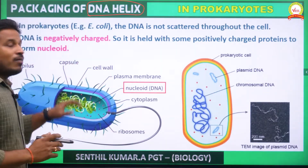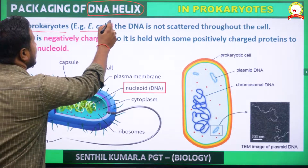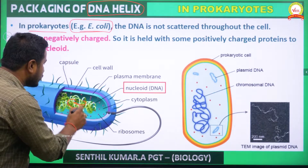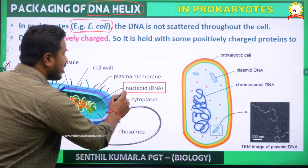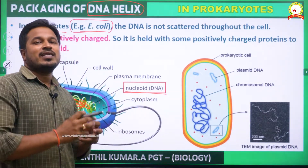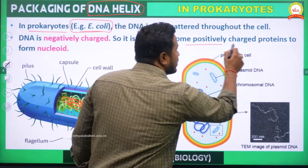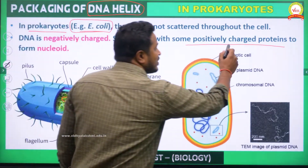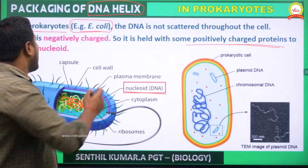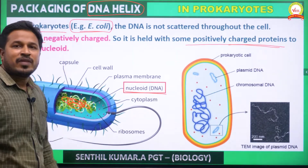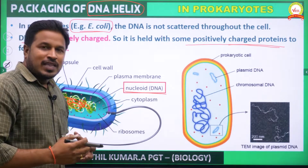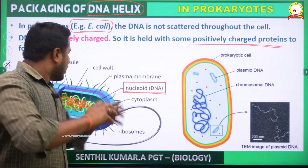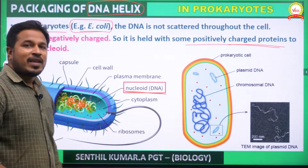In a prokaryotic cell, we will take the example of E. coli. In E. coli, the genetic material — the DNA — is condensed to form a nucleoid. It is condensed with the help of a special kind of positively charged protein. Because the protein is positively charged, it easily condenses with the negatively charged DNA to form the nucleoid in prokaryotes.